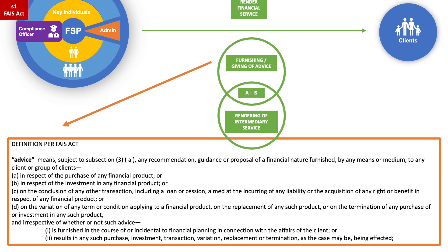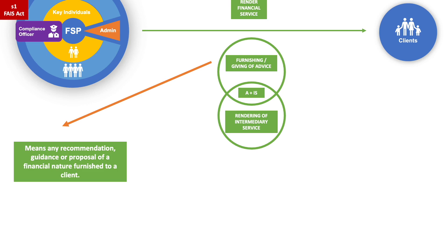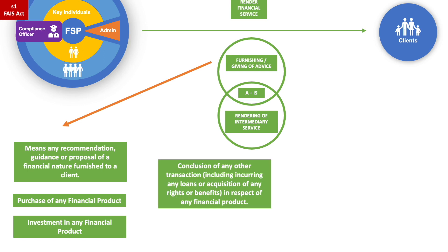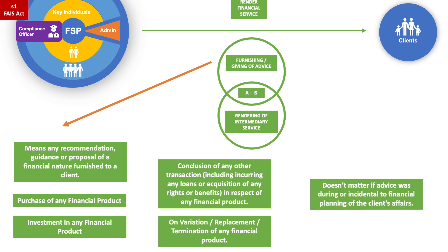This applies irrespective of whether or not such advice: (1) is furnished in the course of or incidental to financial planning in connection with the affairs of the client; or (2) results in any such purchase, investment, transaction, variation, replacement or termination being effected. In summary, furnishing or giving of advice means any recommendation, guidance or proposal of a financial nature to a client in respect of the purchase or investment in any financial product, or the conclusion of any transaction, including incurring loans or acquisition of rights or benefits, or any variations, replacements or terminations of any financial product. It is important to note that it doesn't matter if the advice was during or incidental to the financial planning of the client's affairs.